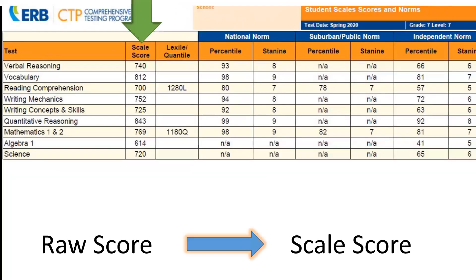Let's look at the scale score. The scale score is based on the actual number of questions your student answered correctly. Your student's raw score — the actual number of questions they got right — is converted to a scale based on the difficulty level of each question, hence the name scale score. Raw scores cannot be compared between test years, but scaled scores can.